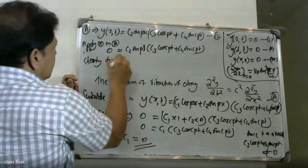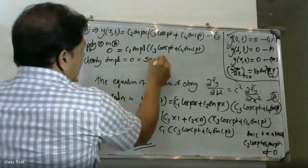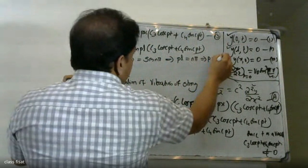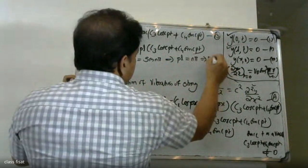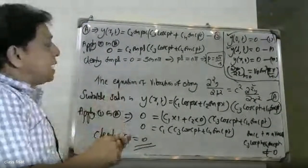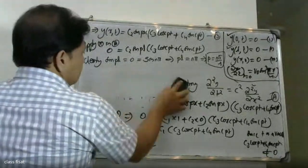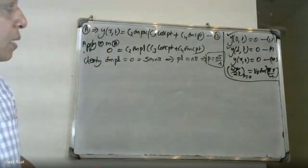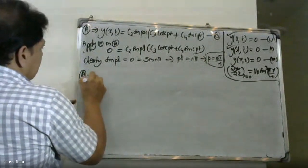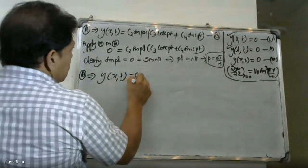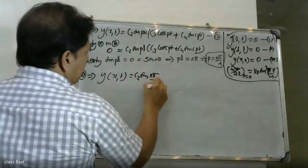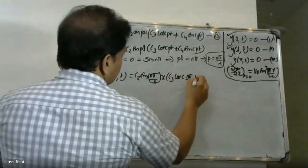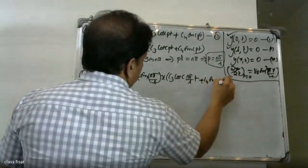Applying the second boundary condition: sin(pL) = 0, so pL = nπ, therefore p = nπ/L. The solution becomes y(x,t) = c2·sin(nπx/L)·(c3·cos(cnπt/L) + c4·sin(cnπt/L)).